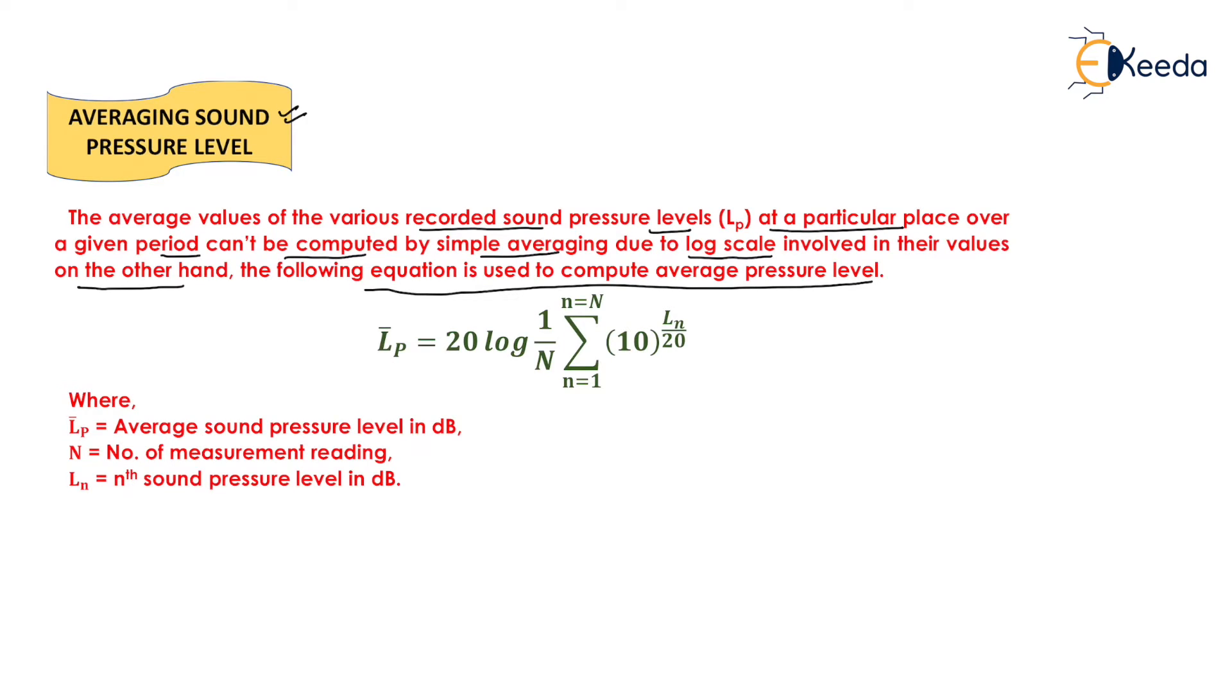On the other hand, the following equation is used to compute average pressure level. The formula is L_p equals 20 log, 1 by N, summation n equals 1 to N, 10 to the power L_n upon 20. Where L_p is the average sound pressure level in decibels, N is the number of measurement readings, and L_n is the nth sound pressure level in decibels. By this formula we can determine the average sound pressure level.